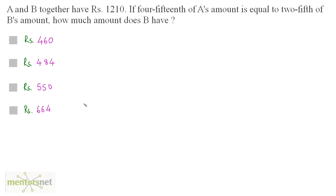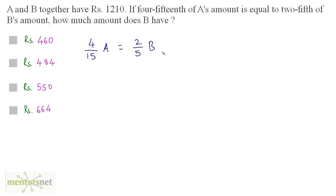A and B together have 1210 rupees. If four-fifteenths of A's amount is equal to two-fifths of B's amount, how much amount does B have? Four-fifteenths of A's amount is equal to two-fifths of B's amount.